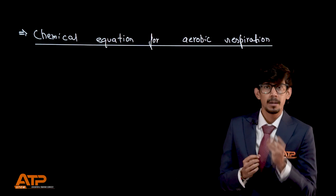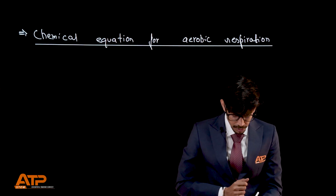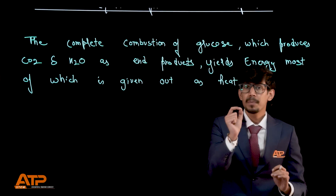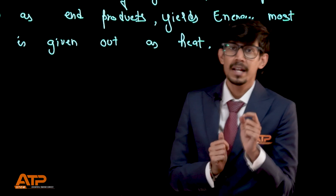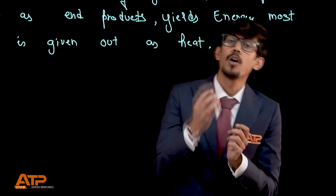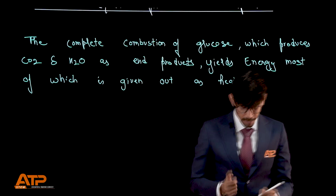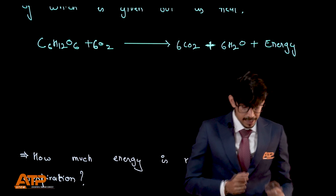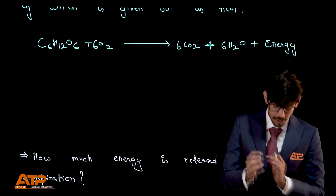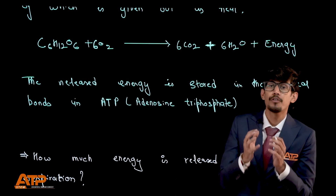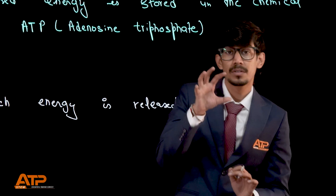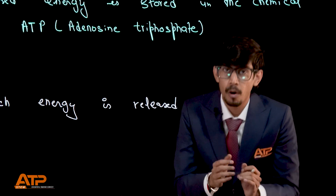Glucose is a six-carbon compound — C6H12O6. In aerobic respiration, glucose is completely oxidized in the presence of oxygen. The complete combustion of glucose gives us carbon dioxide, water, and energy. The chemical equation is: C6H12O6 + O2 → CO2 + H2O + energy. Most of this energy is released as heat, but we trap and store this energy in chemical bonds in a molecule called ATP — adenosine triphosphate.